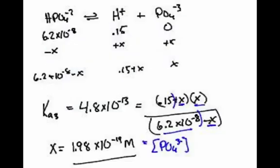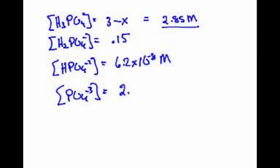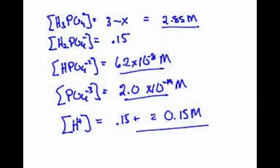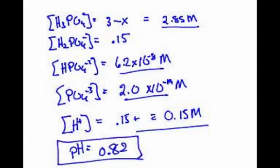Or let's say 2.0 times 10 to the minus 19th molar. Very, very low. And we have one more left, and that is the hydrogen ion, and that, of course, is just going to be 0.15, plus this number, and then plus this number, which equals 0.15 molar. And if I wanted to find the pH, the pH is the negative log of 0.15, and that would be 0.82, an acidic pH. And that's how polyprotic acids work.